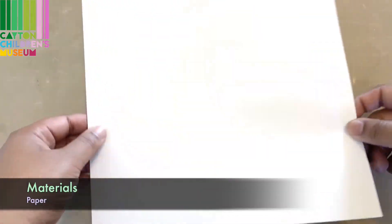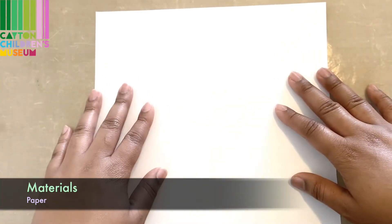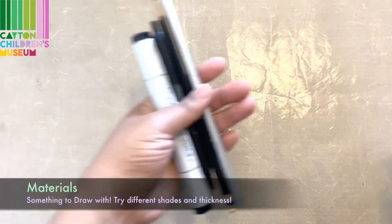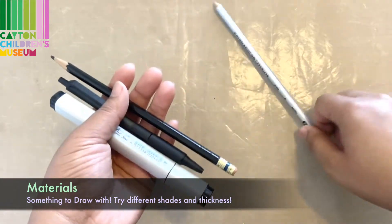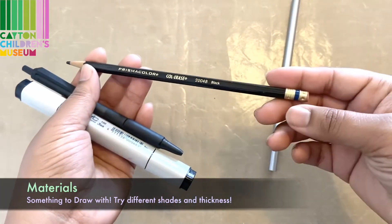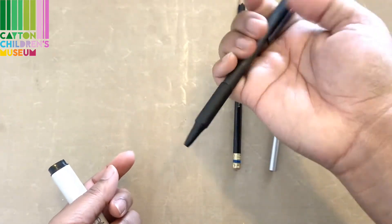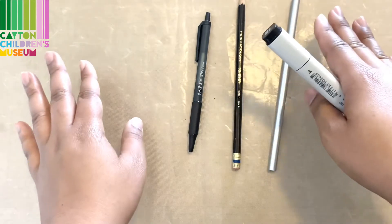What you'll need for this project is some paper to draw on. It can be any kind of white paper or even colored paper. I'm using some cardstock but you can use anything you have on hand. You'll also want to grab something to draw with. I've got a silver colored pencil, a regular black pencil with eraser, a normal pen, and a marker.